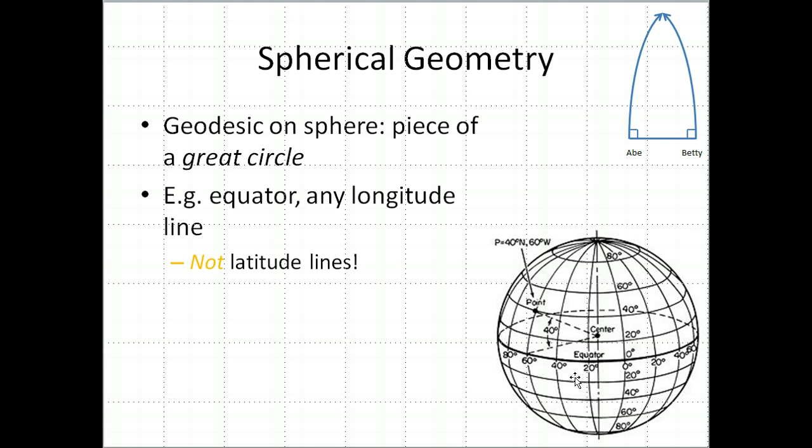So you just cut the sphere with a plane through the center and you can have a tilted version of a longitude line and that will still be a geodesic. The equator is a geodesic. Any longitude line. It's much easier to see that if you're on the equator and you start marching eastward and never turning, you're going to stay on the equator.